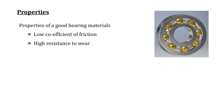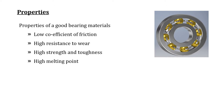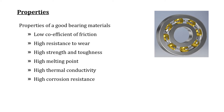A good bearing material should have high strength and toughness, and a high melting point — because when rotating elements transmit power there is an increase in temperature at the bearing surface, and a high melting point prevents distortion due to temperature changes. It should have high thermal conductivity so that heat generated at the bearing surface is removed easily, high corrosion resistance since bearings are sometimes used in corrosive environments, and it should be economical as per the application requirements.